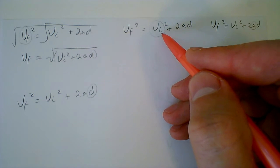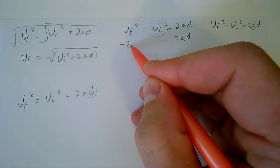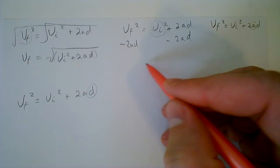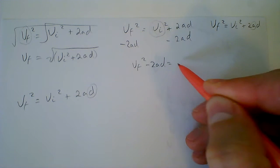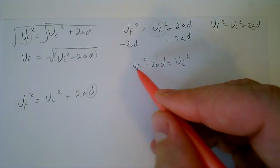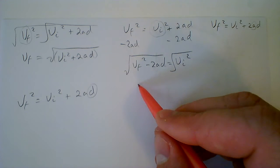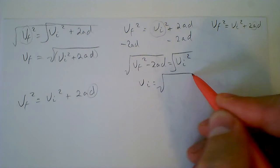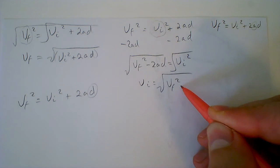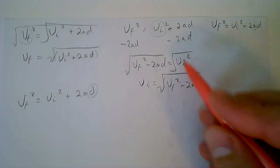To solve for VI, what we're going to do is subtract 2AD from both sides, minus 2AD, and we end up getting VF squared minus 2AD equals VI squared. Take the square root of both sides, and you end up getting VI equals square root of VF squared minus 2AD. All of that, once again, underneath the square root.